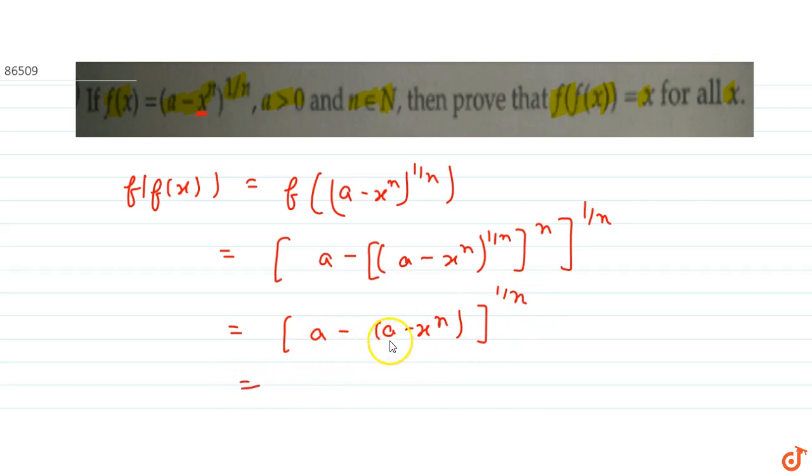So we get, see a minus of a, this will be 0, and minus into minus x to the n. So this will be x to the power n, whole power 1 by n. Now n into 1 by n, this will be 1, so we get x.